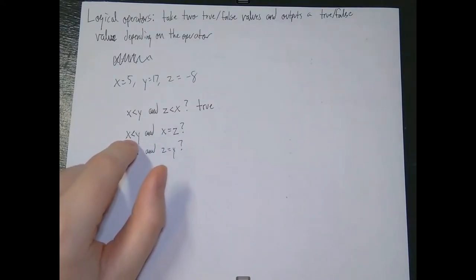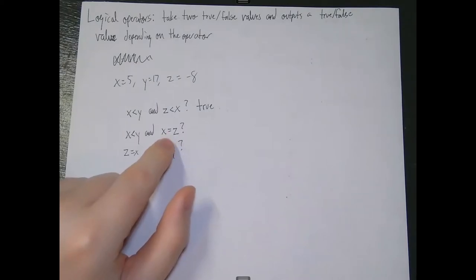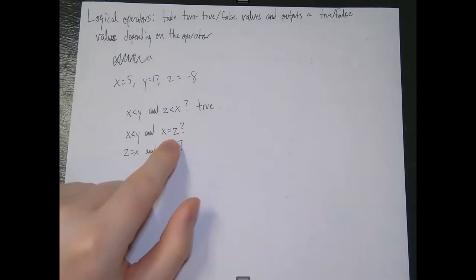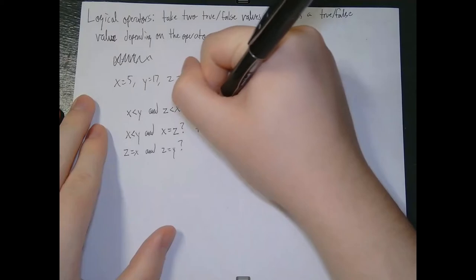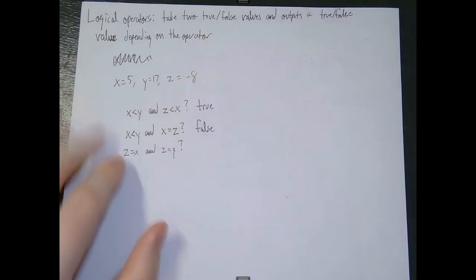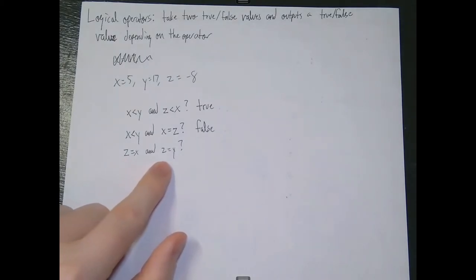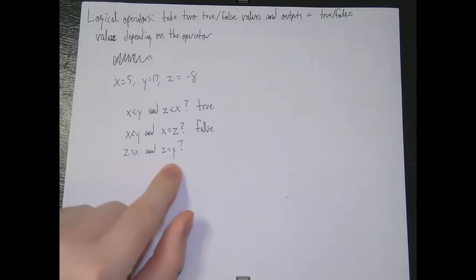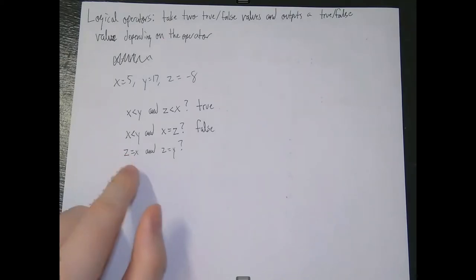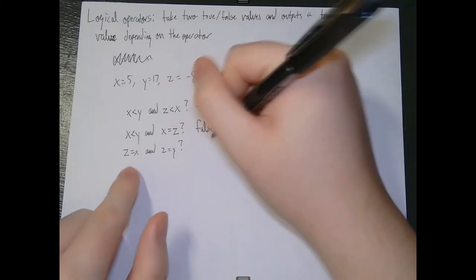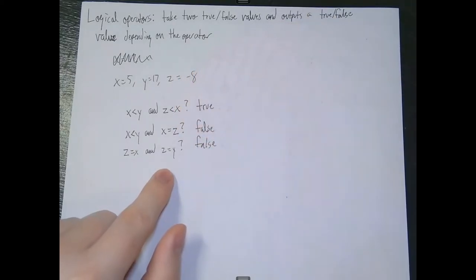For x < y AND x == z: x < y is true, but 5 is not equal to -8, so that part is false. Therefore it is not true that x is less than y and x equals z — the entire statement is false. And for z == x AND z == y: both are false since neither z equals x nor z equals y. So this is also false.